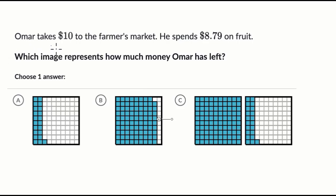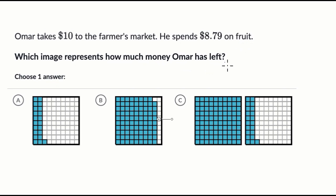We're told Omar takes $10 to the farmer's market. He spends $8.79 on fruit. Which image represents how much money Omar has left? Pause this video and have a go at that before we do this together.